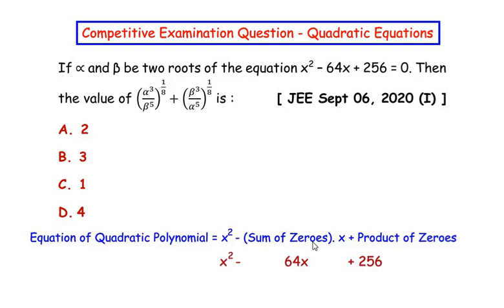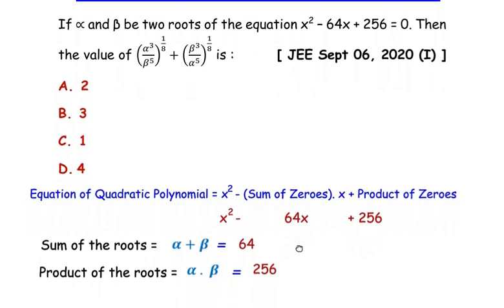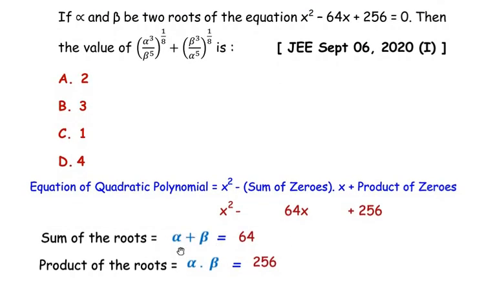By comparing the coefficient of x in both equations, the sum of the zeros is 64, that is alpha plus beta equals 64. Similarly, the product of zeros is 256, that is alpha times beta equals 256.